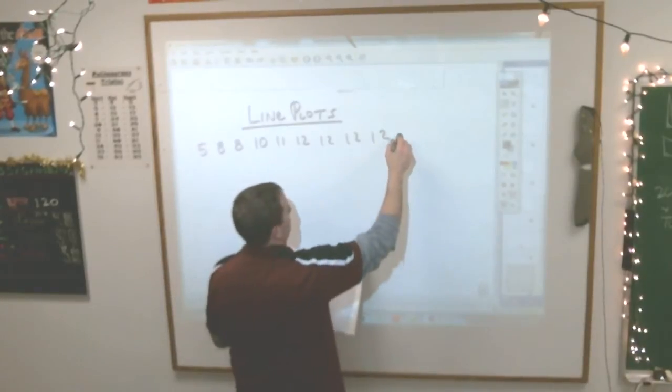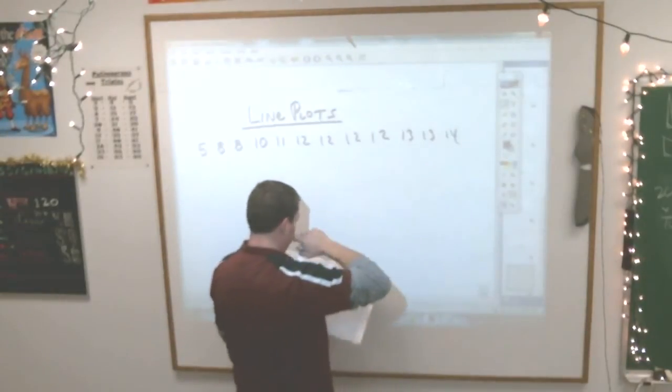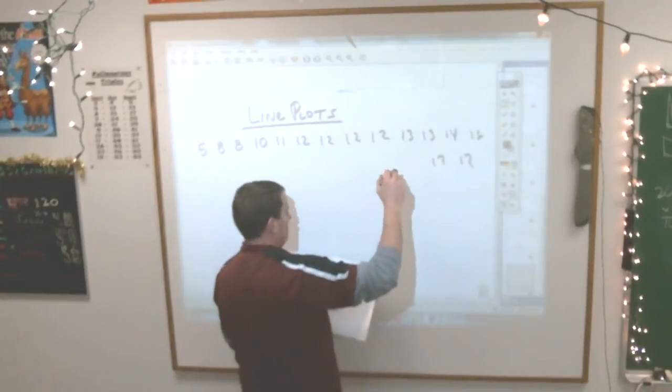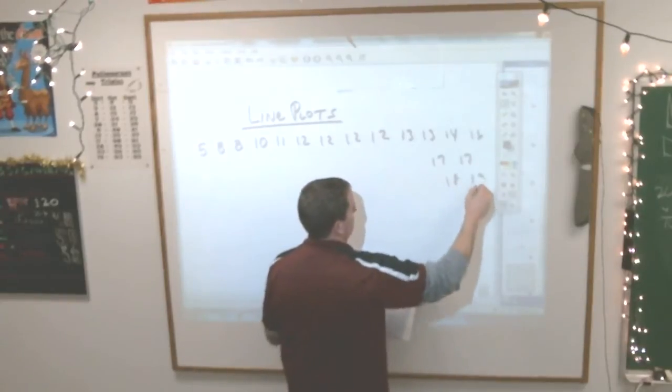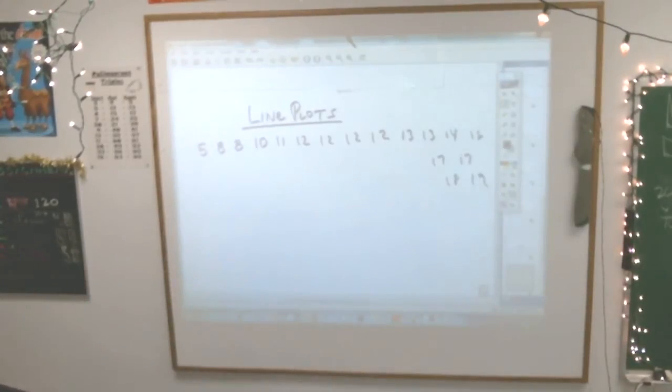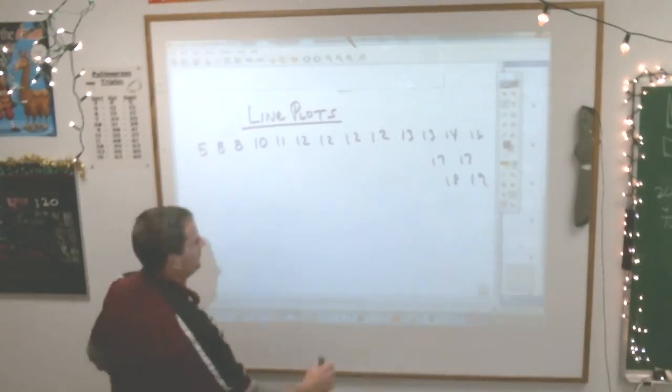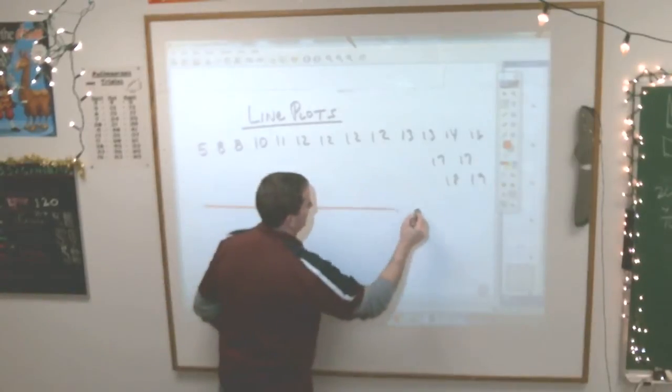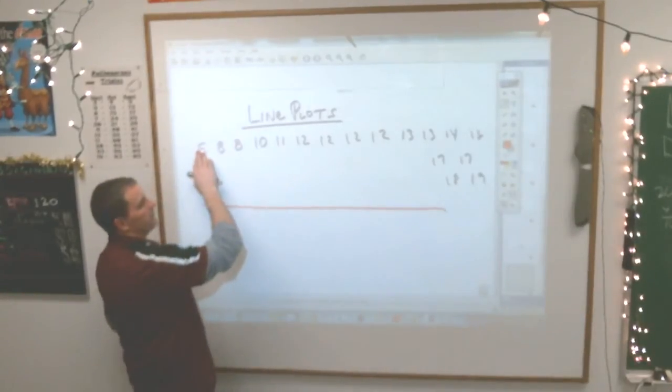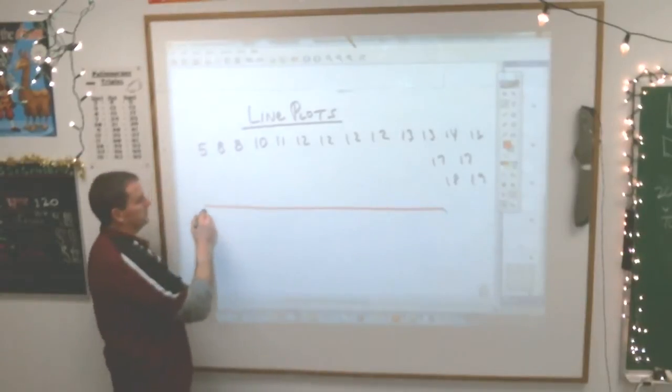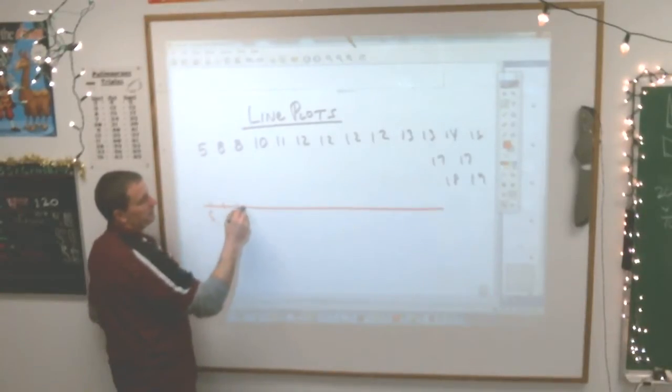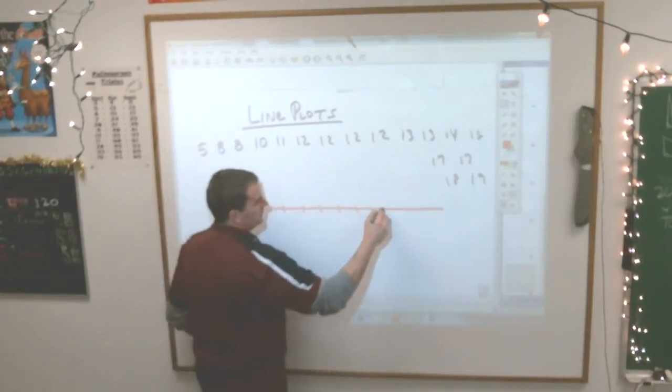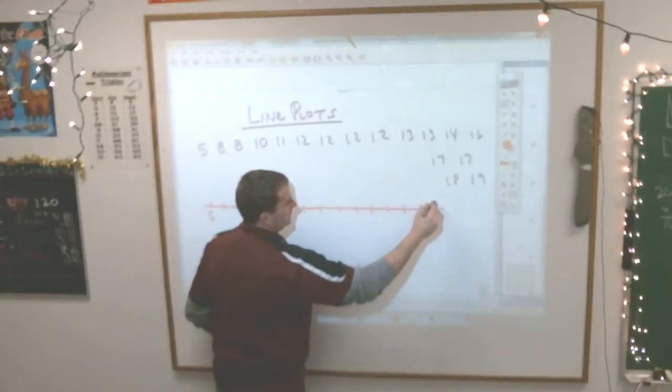So if I'm making a line plot there, what do I do? I've got my raw data up there. I give myself a line. And on that line, I label it from 5 to 19. So let's start. 5, 6, 7, 8, 9, 10, 11, 12, 13, 14, 15, 16, 17, 18, 19.